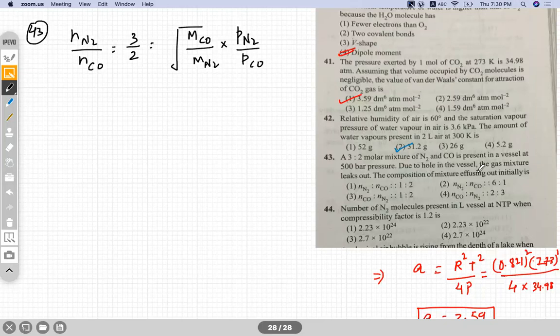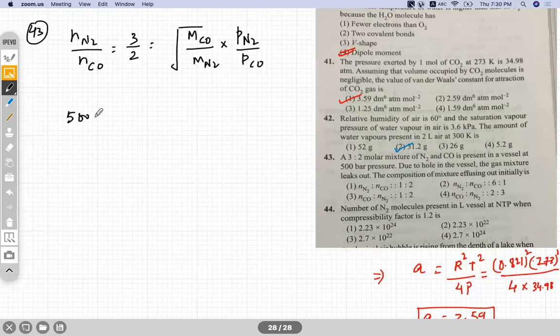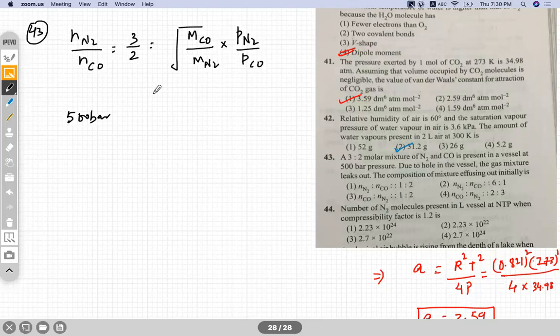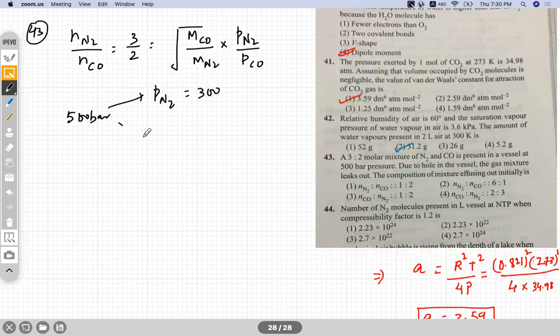We need to find out the composition mixture after diffusion. We have this number of moles 3 by 2, so if 500 bar is the total pressure and the ratio of number of moles is 3 by 2, it means pressure of N2 would be 300 and pressure of CO will be 200.